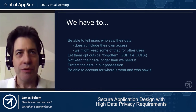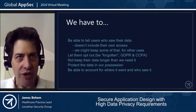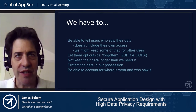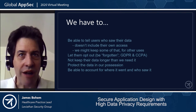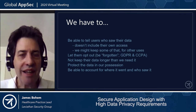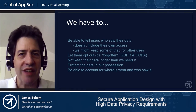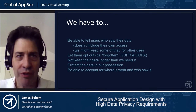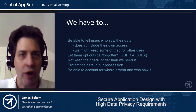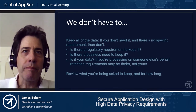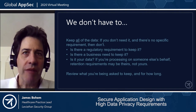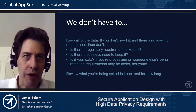Generally, we need to be able to tell users who saw their data — not including their own accesses, though we might want to keep those for other reasons. We need to let them opt out, which is the right to be forgotten under GDPR and CCPA. We need to absolutely not keep their data any longer than we need it. We need to protect data and account for where it went and who saw it. What we don't have to do is keep all the data — if we don't need it and there's no specific requirement, don't keep it.